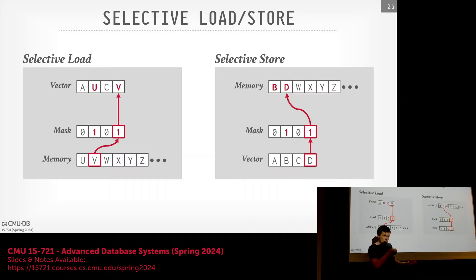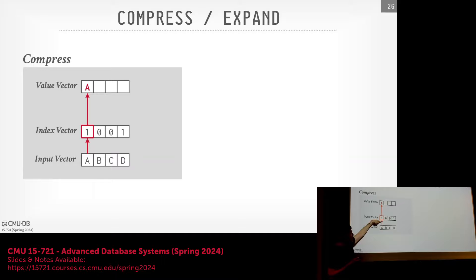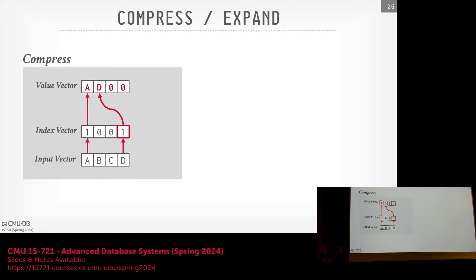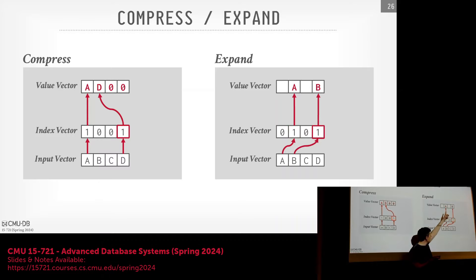Compress moves values within a vector based on an index: wherever there's a 1 in the mask, the corresponding value from the input vector gets written to the front of the output vector, with zeros filling the rest. Expand is the reverse — takes compressed values from the front and places them at the positions indicated by ones in the mask, with zeros elsewhere. They're exact inverses of each other.